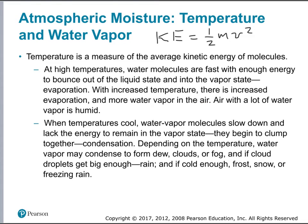Humidity basically relates to the moisture content in the air — how much water vapor is the air holding. The reverse is also true: when temperatures cool, things are moving more slowly. Water vapor molecules in the air slow down, they lack the energy to remain in the vapor state, and so they begin to clump together. We call this condensation. Depending on the temperature, water vapor may condense to form dew, clouds, or fog, and if droplets get big enough you get rain. If it's cold enough, that can turn into frost, snow, freezing rain, or sleet.